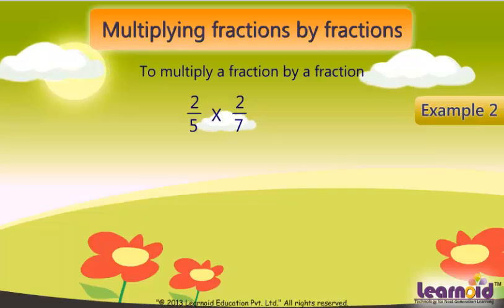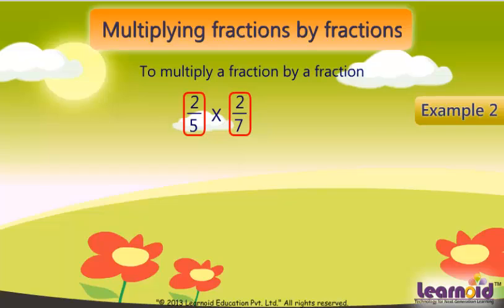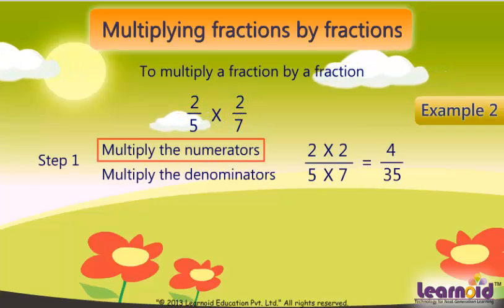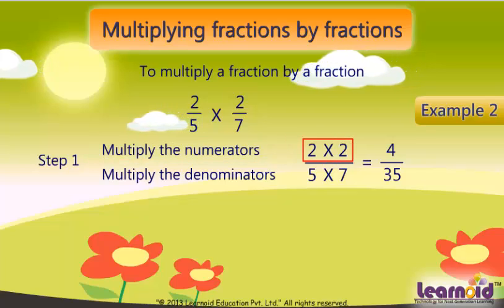We have to multiply 2/5 by 2/7. First, we will multiply the numerators, 2 and 2, which is equal to 4.